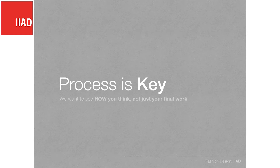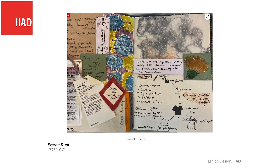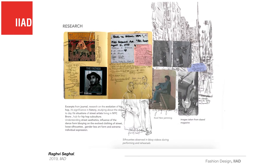I'd like to show you some student work. This is work by Prerna, who is currently a final year student. This is how she started her sustainability project — she collected a few things and tried to replicate the texture, where things came from, what is written on a tag. It's just collecting information; this is the first step. Our students maintain a journal where they record every day's information throughout one project — one journal per project. Some students have three or four journals per project, and the entire process is recorded in their journal.